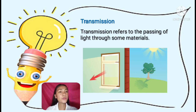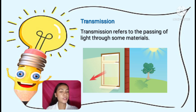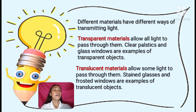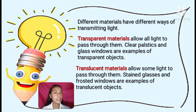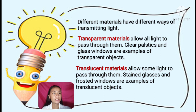The last interaction is transmission. Transmission refers to the passing of light through some materials. When light passes through a glass window, it is transmitted to the other side. Different materials transmit light differently. Transparent materials allow all light to pass through them — clear plastics and glass windows are examples. Translucent materials allow some light to pass through them — stained glass and frosted windows are examples. Opaque materials do not allow light to pass through them — concrete walls, wooden doors, and mirrors are examples.